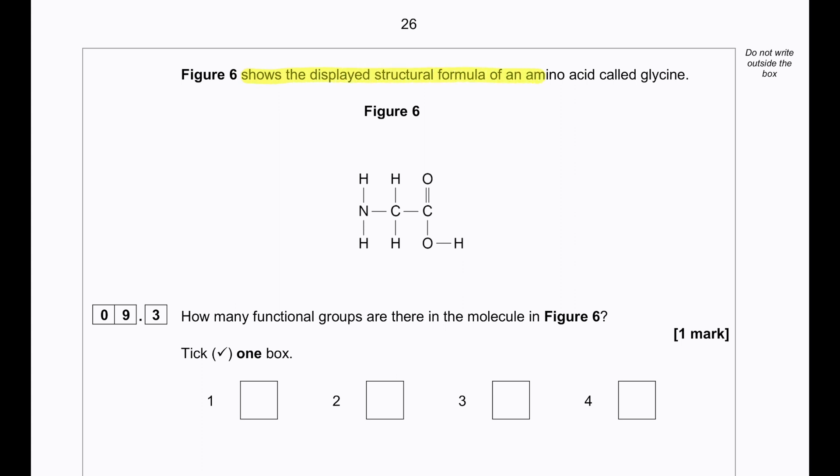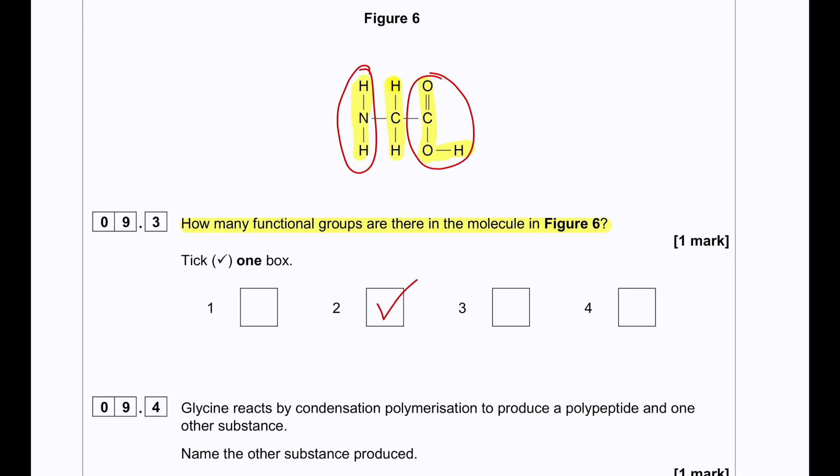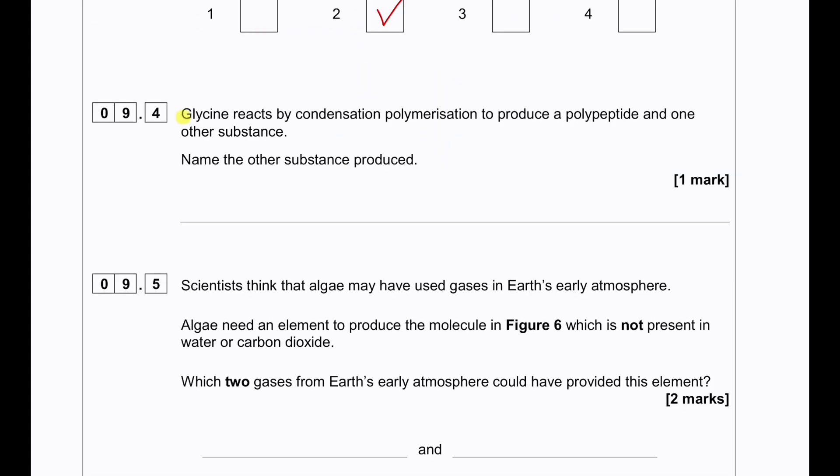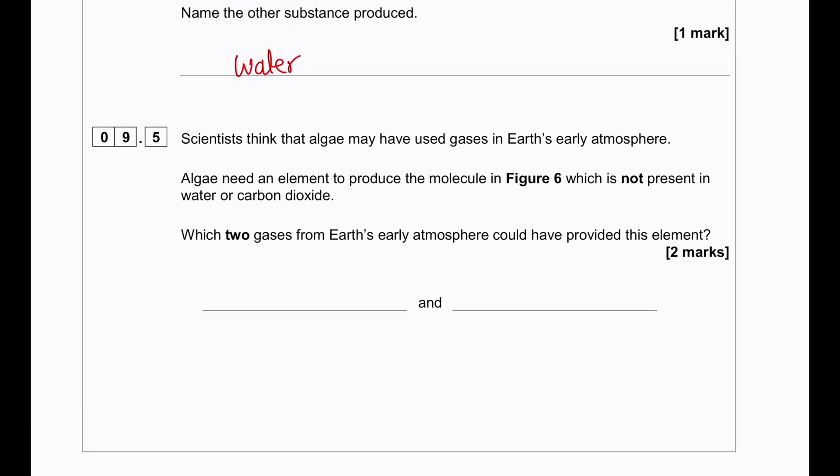Figure 6 shows the displayed formula of an amino acid called glycine. We can see the amino part, we can see the carboxylic acid and the middle carbon. How many functional groups are there in the molecule of figure 6? So we can see two functional groups. Glycine reacts by condensation polymerization to produce a polypeptide and one other substance. So condensation polymerization in living organisms always produces water.